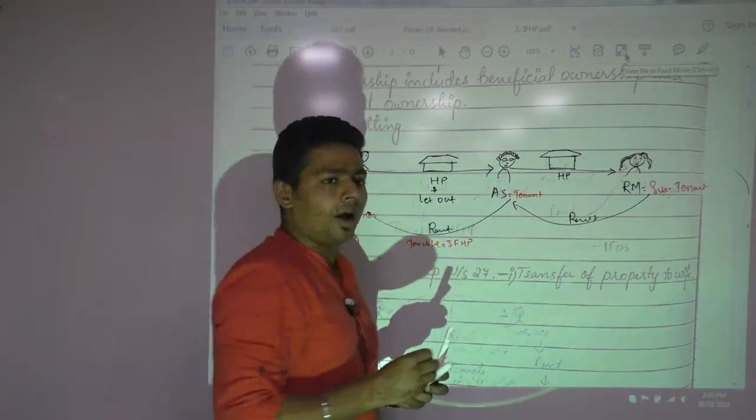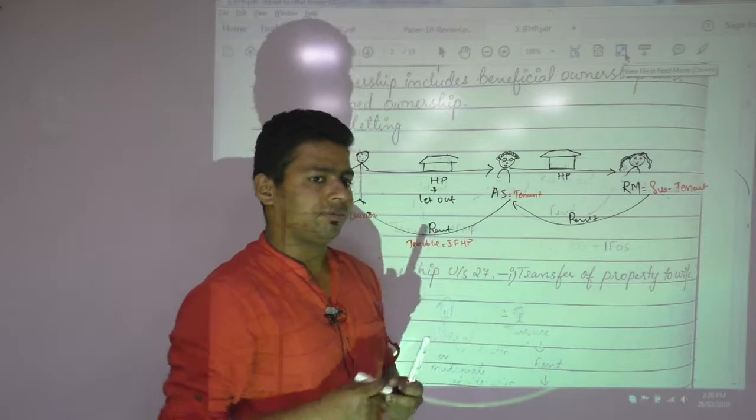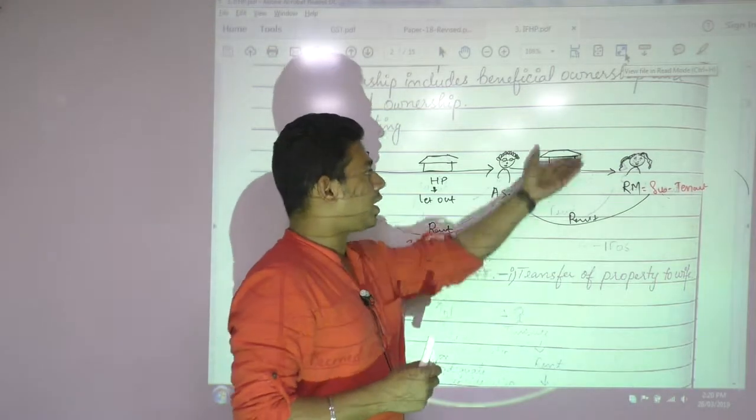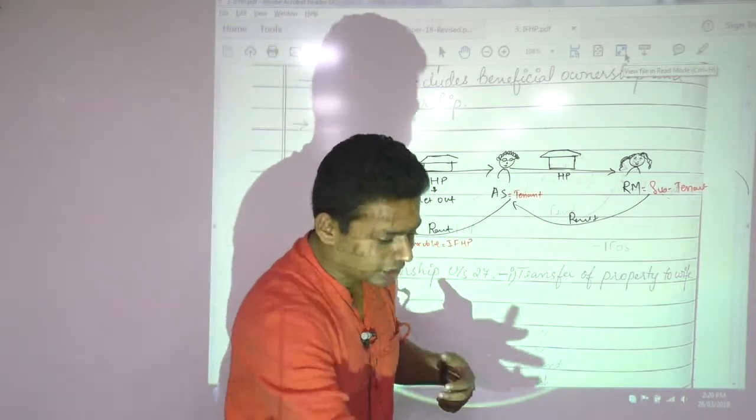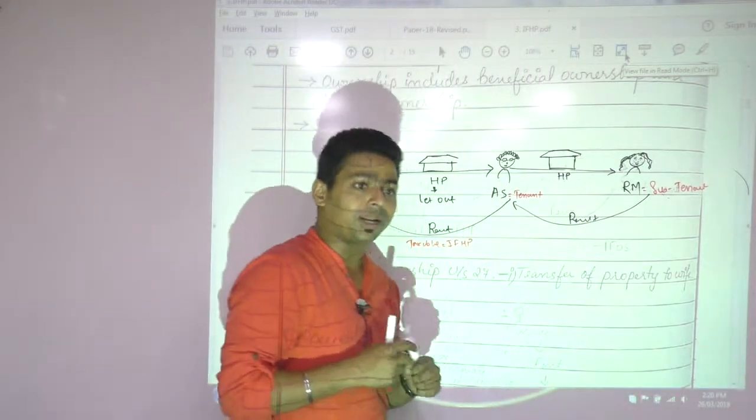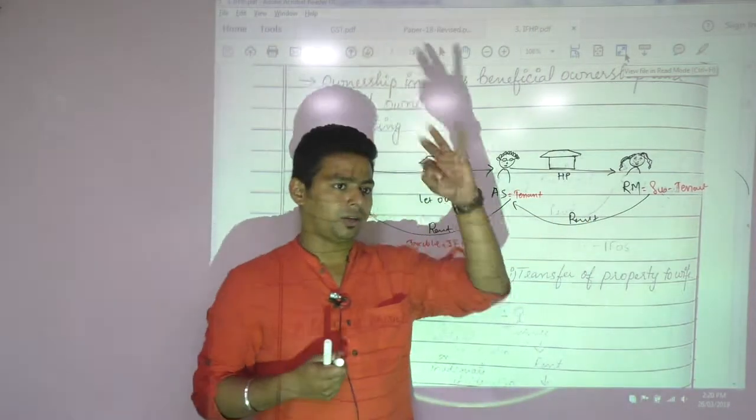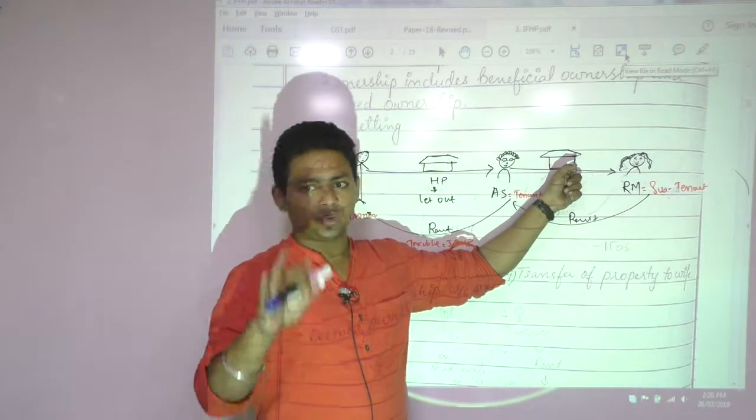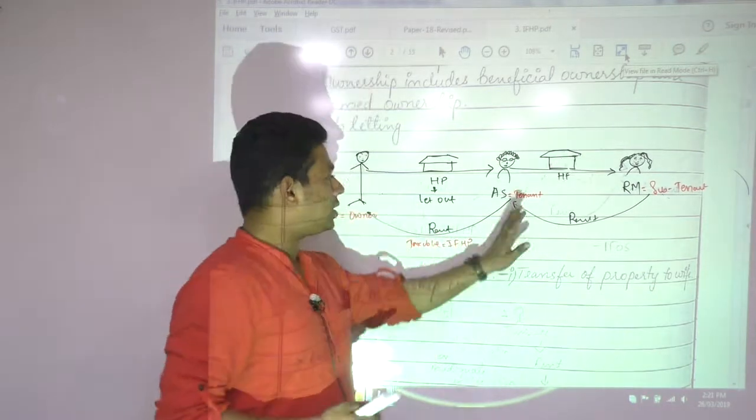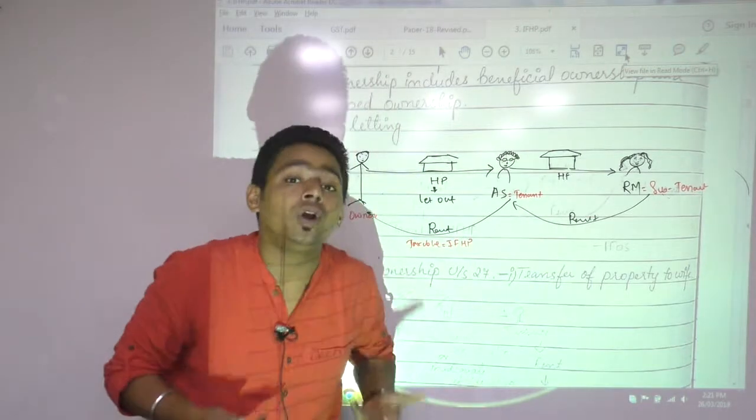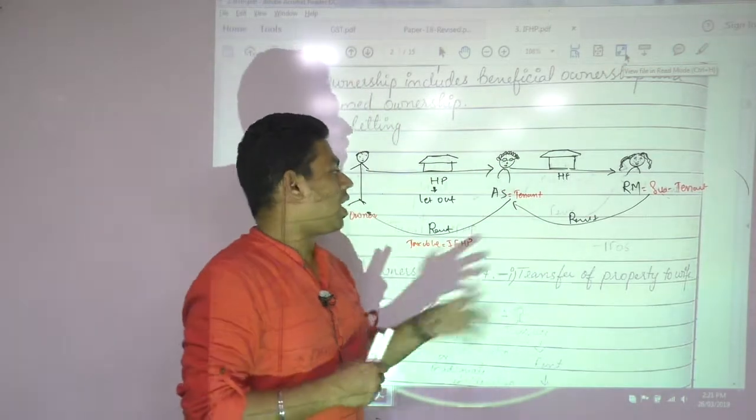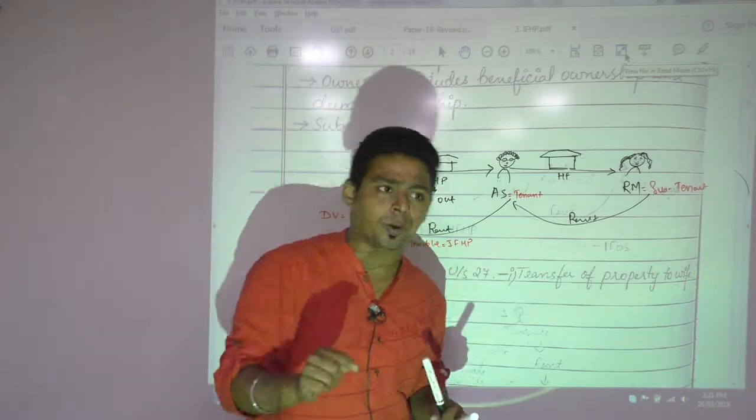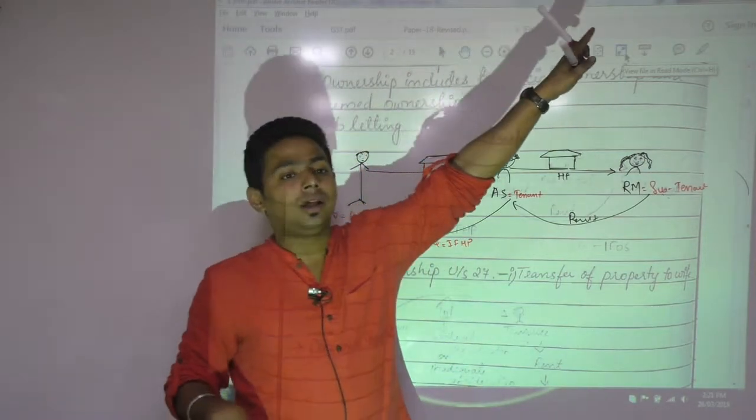So Mr. Ranjesh, the tenant, will pay tax under which head? This is also rent of house property, but can it be taxable under house property? No. Always check three conditions: there is a house property - yes; he is not using it for business - yes. So first and third conditions comply. What is the second condition? The assessee earning rental income must be the owner. This assessee is not the owner, therefore it is not taxable under this head. Whenever something is not taxable under house property, it will be taxable under IFOS.